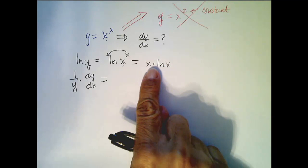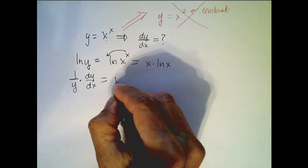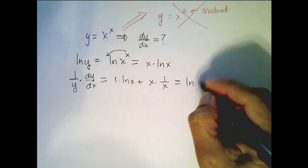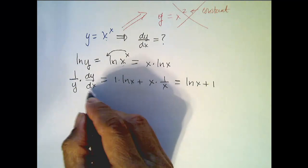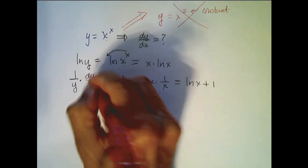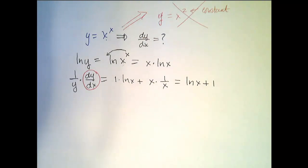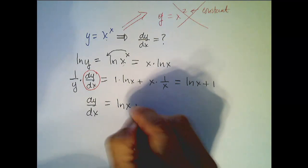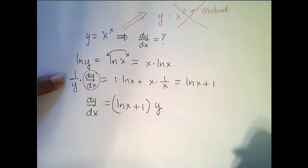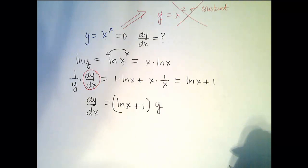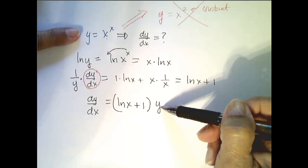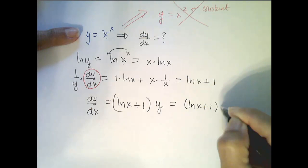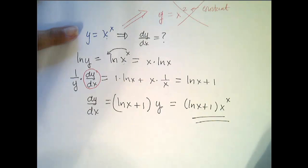Step 2: take the derivative of both sides with respect to x. On the left, using implicit differentiation, we get 1 over y times dy/dx. On the right, we apply the product rule: 1 times ln of x plus x times 1 over x, which simplifies to ln of x plus 1. Step 3: solve for dy/dx. Multiplying both sides by y gives dy/dx equals (ln x + 1) times y. Substituting y equals x to the x, the final answer is (ln x + 1) times x to the x.